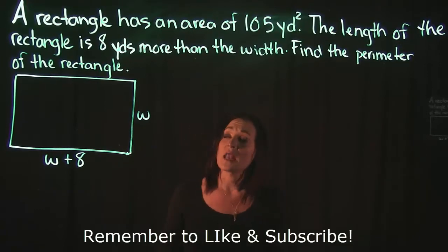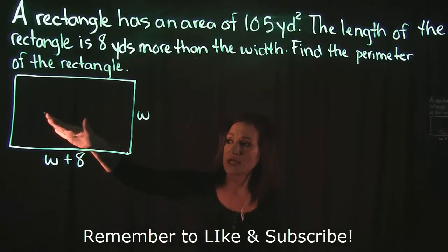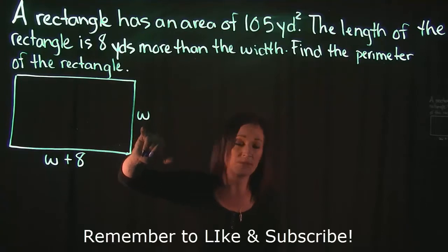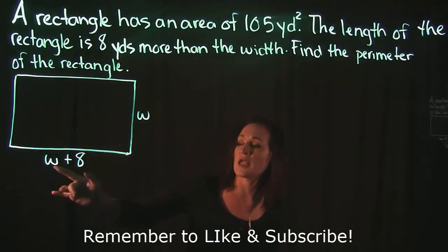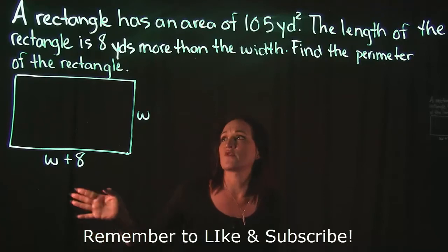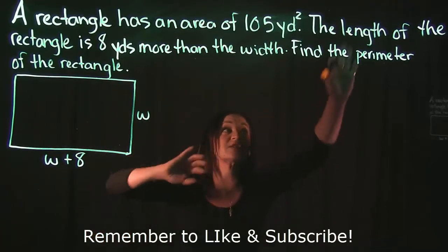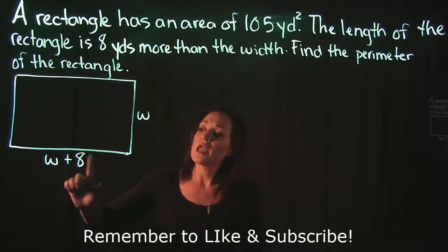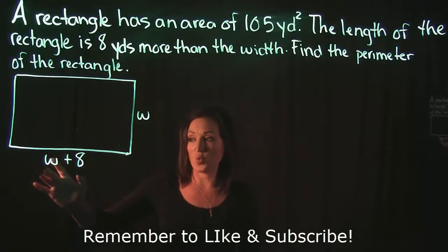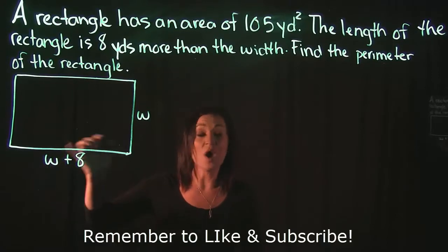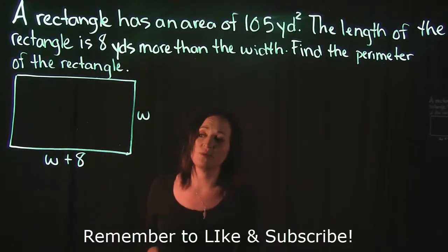There's a couple things going on here. With this problem they give us the rectangle and they have the width labeled as W and the length labeled as W plus 8. That comes from the fact that the length of the rectangle is 8 yards more than the width. So whatever the width is we want 8 more.